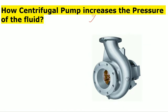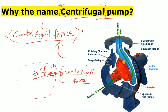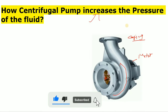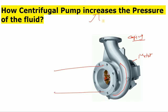How does a centrifugal pump increase the pressure of the fluid? As we have already discussed, there is an impeller which gives rotary motion to the fluid. This is the motor, and this is the casing. Here you can see: this is the casing, this is the impeller, this is the pump casing. This one is the upstream flange — this is the suction side and this is the discharge side. This is the suction line and this is the discharge line.